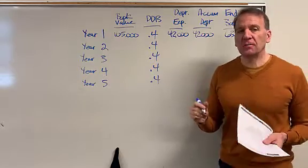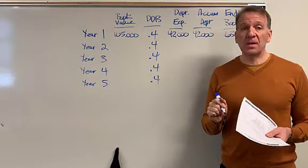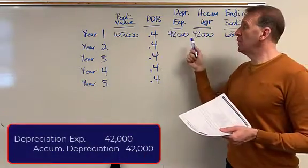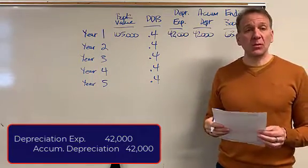So in the first year, my journal entry for depreciation expense is debit depreciation expense $42,000, credit the accumulated depreciation $42,000.